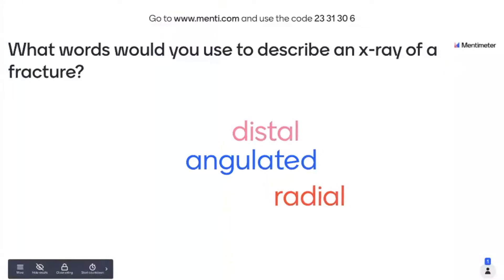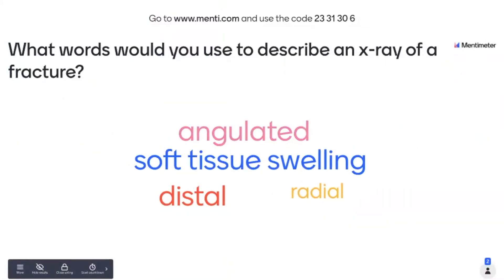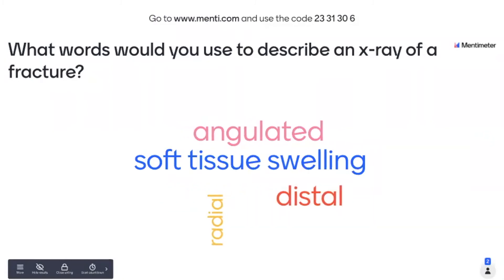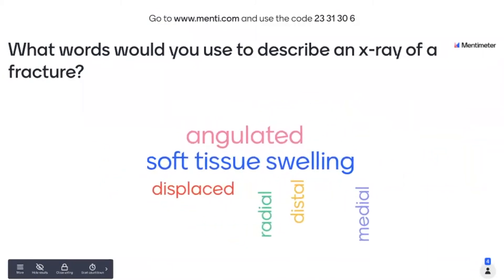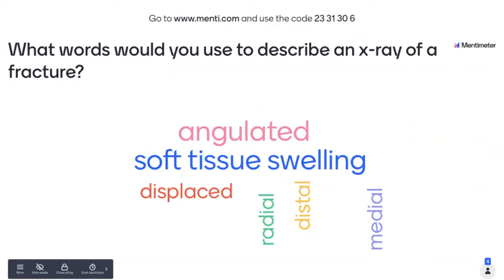We've got some words coming up — distal, angulated — and this is going to form a word cloud so repeated words get bigger. So some of the words: displaced, radial, green stick, buckle, translated. Getting some of the flavour of the words there — that's great. That's the common language that we use with our colleagues.